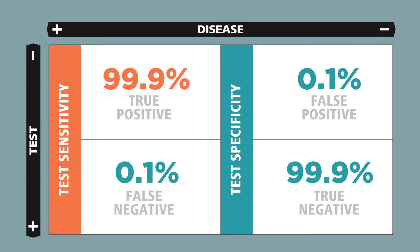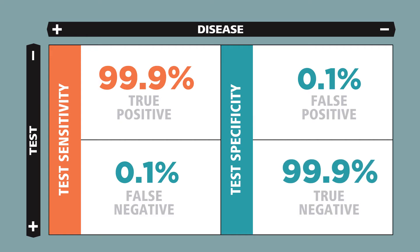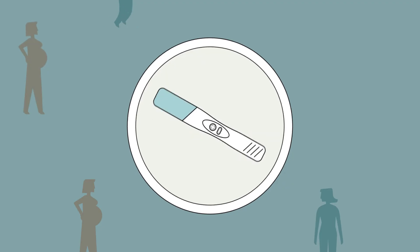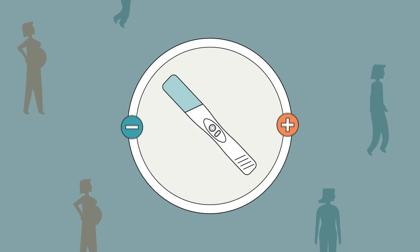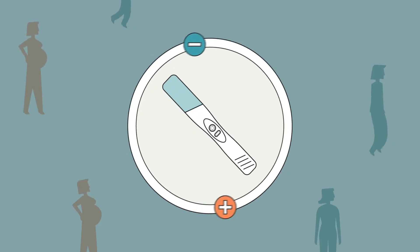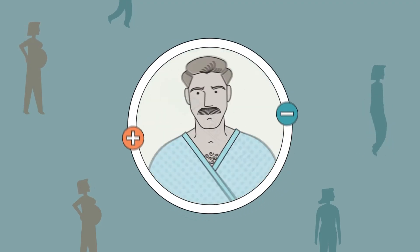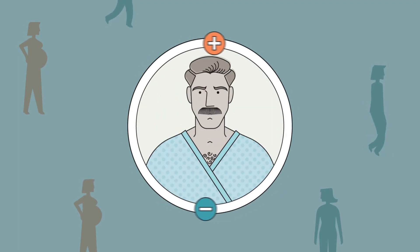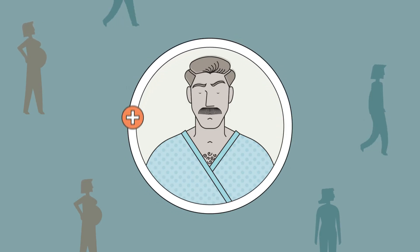The ideal test is one that has both high sensitivity and high specificity, but the value of a test depends on the situation. If a good test, such as a pregnancy test, is conducted on a patient very unlikely to have the condition, the test result may be less reliable or surprising.